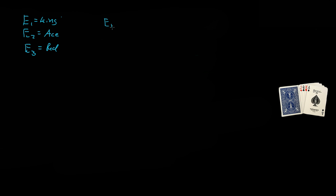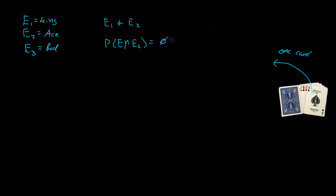So is Event 1 and Event 2 mutually exclusive? Well, is the probability of Event 1 intersect Event 2 equal to the null space? Can you get a king and an ace if we just took out one card? You cannot get a king and an ace at the same time if we take out one card. So that's null — they do not intersect with each other. So they are mutually exclusive.